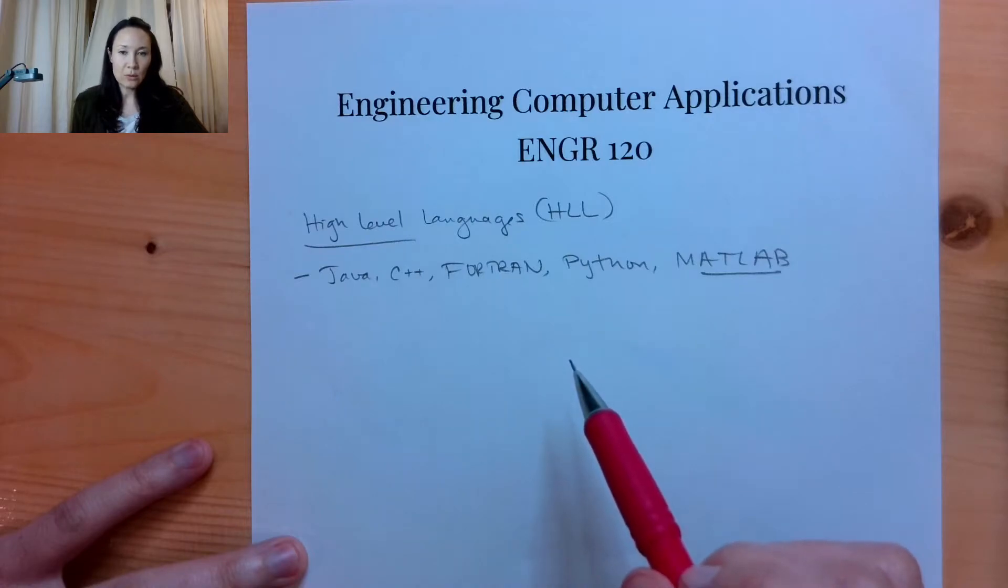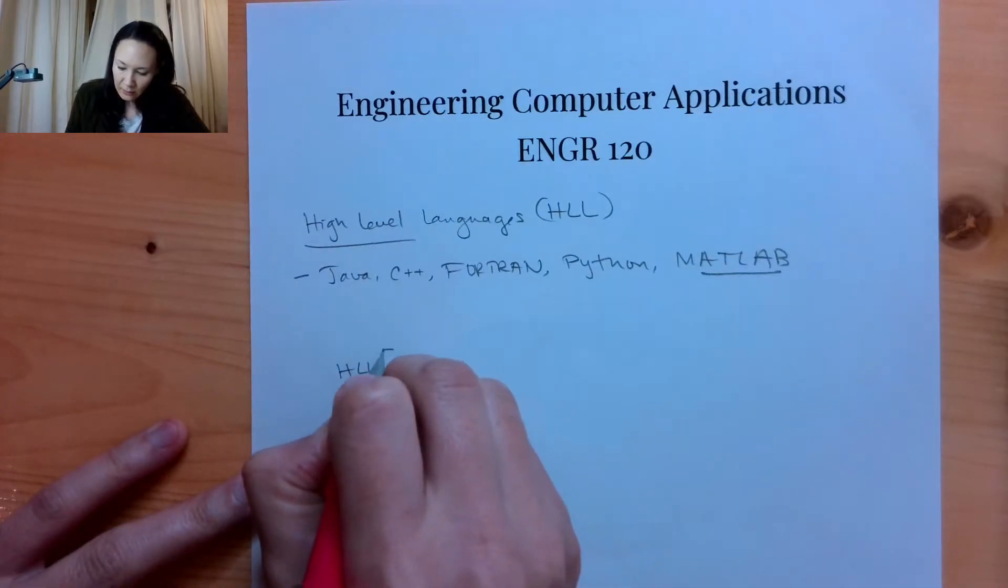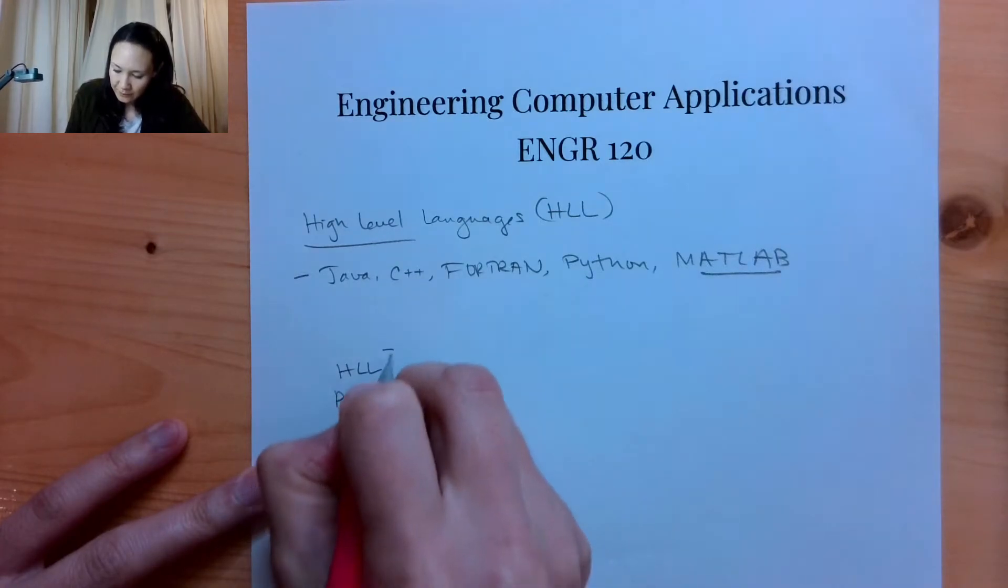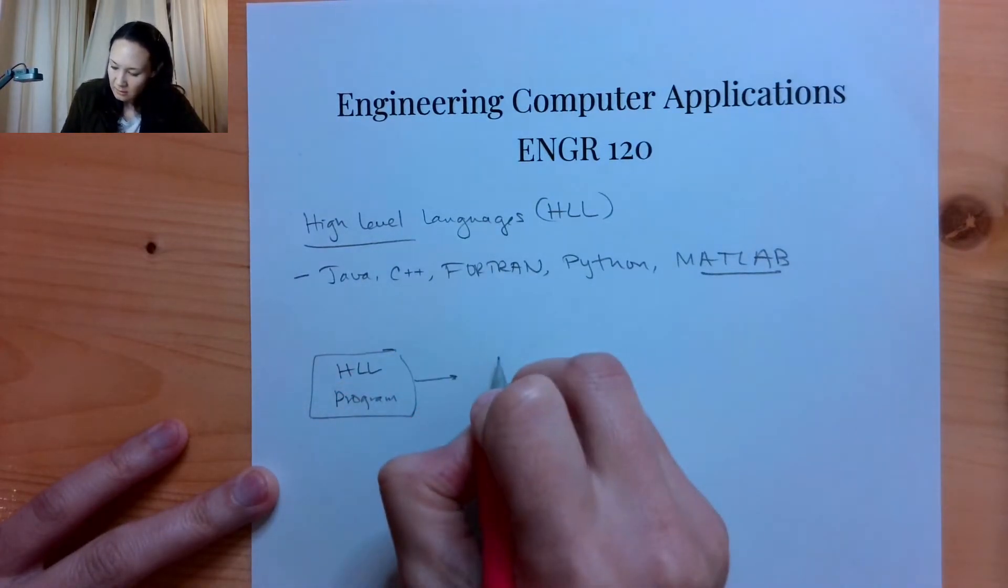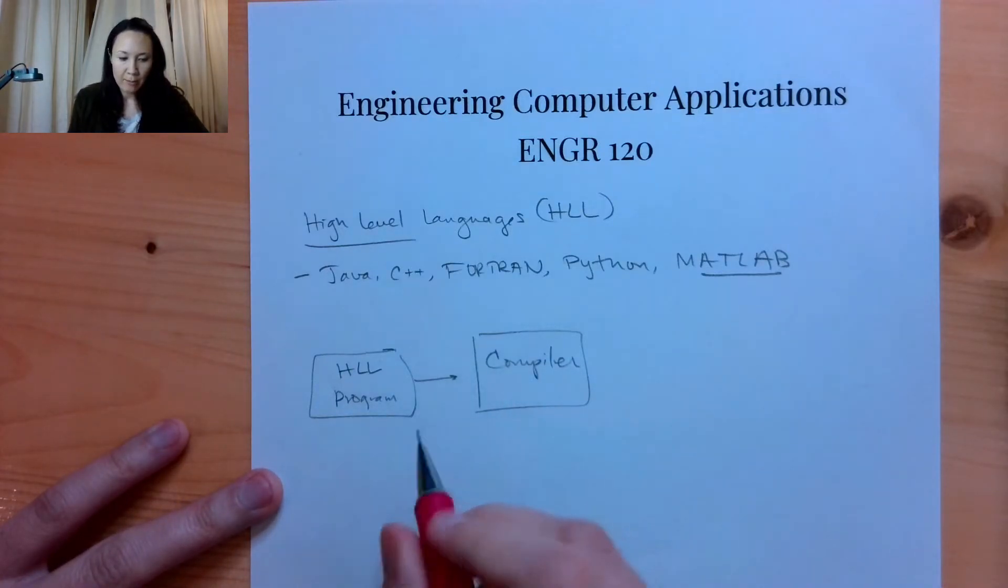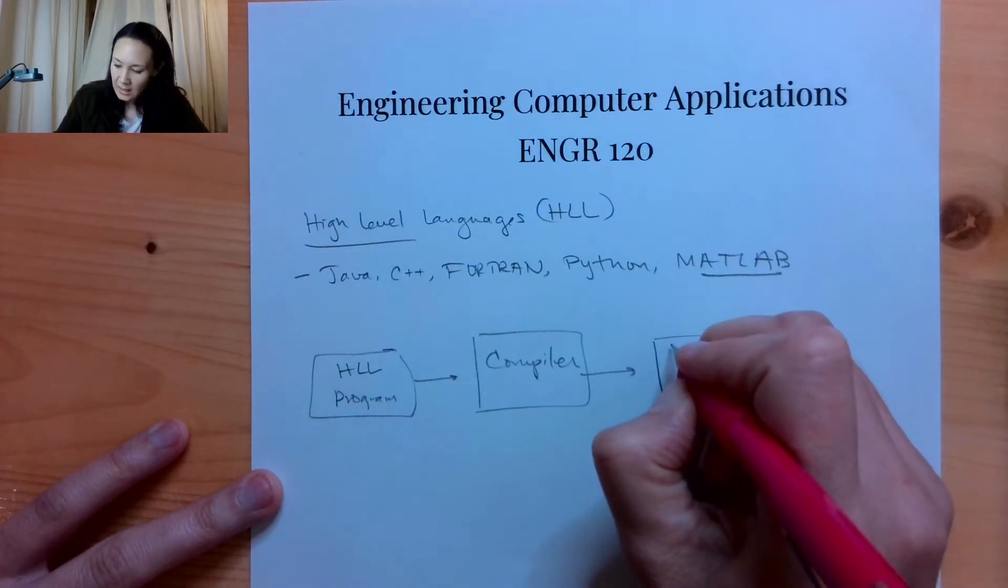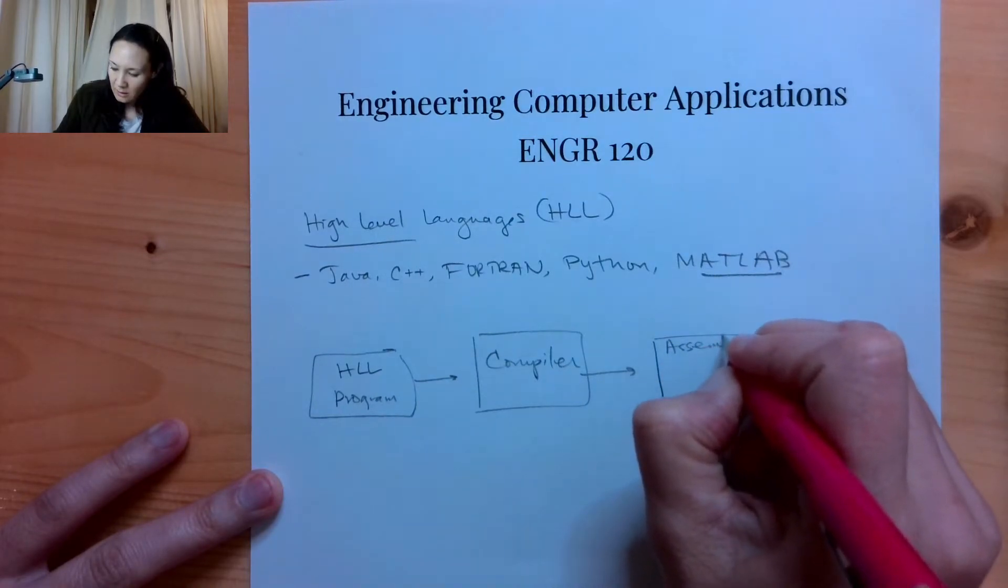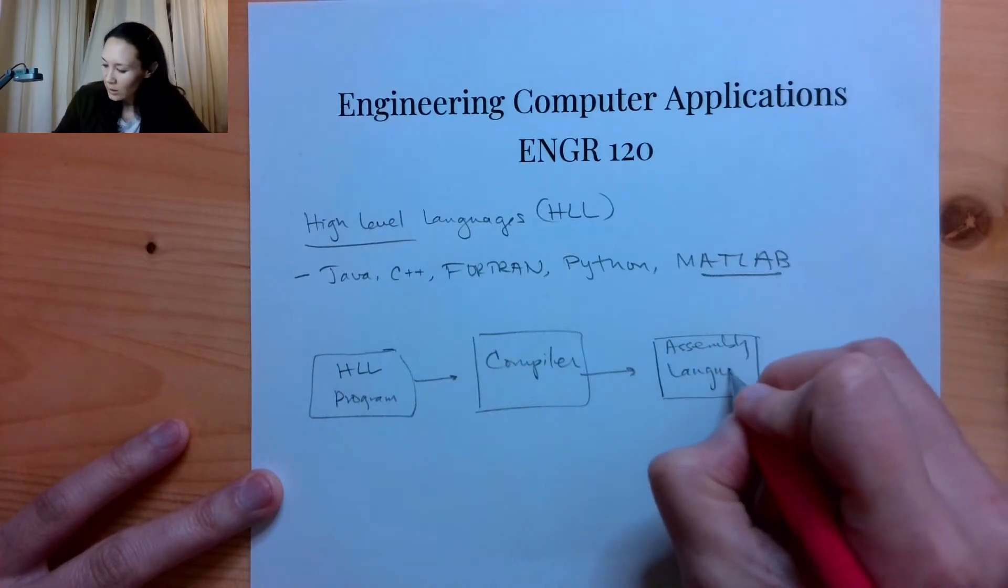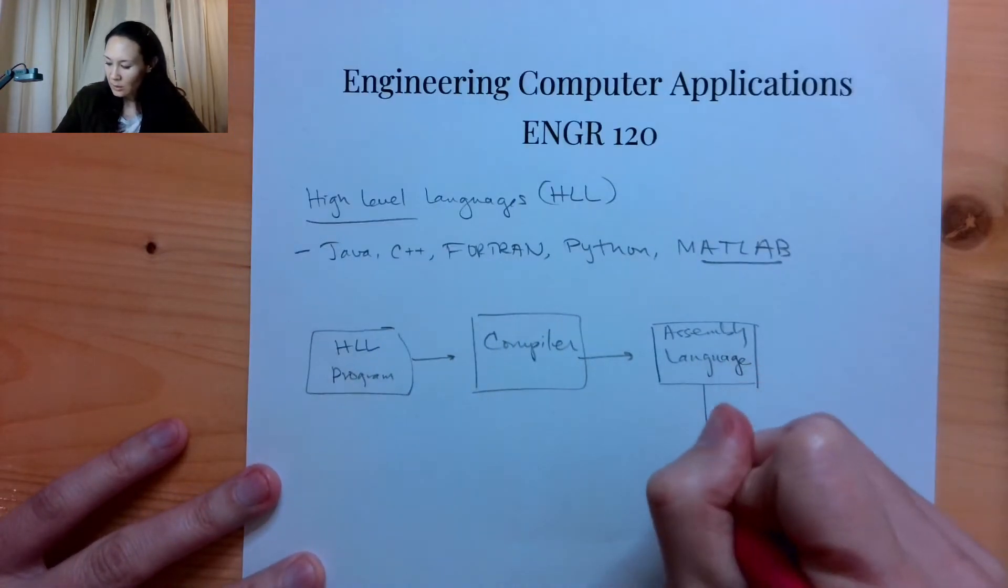A low-level language would be something like assembly. It's actually like a language that the computer understands. So there's a linker between these. The high-level program is fed into a compiler. And what the compiler is going to do, the compiler is actually a program, and it converts this high-level language program into a different language that is more low-level that the computer will understand. And it's called assembly, assembly language, or sometimes machine language, and then when our program is in assembly, now it can actually be understood by the computer.